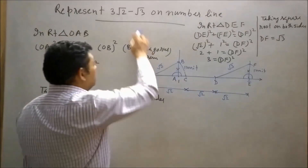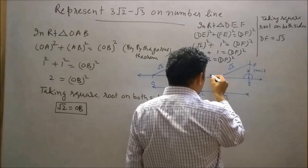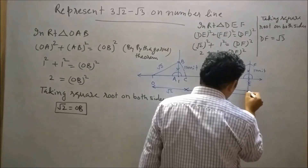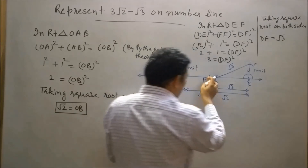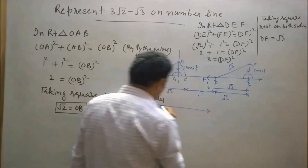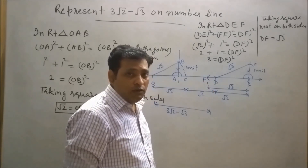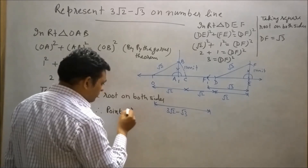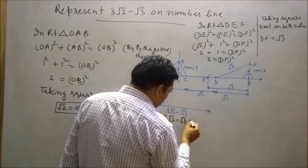Now our requirement is to represent minus √3 on the number line. So we will draw an arc equal to DF to the left hand side of point E. This arc will intersect the number line at point F. OE is 3√2 and we are subtracting √3, so point F represents 3√2 minus √3 on the number line.